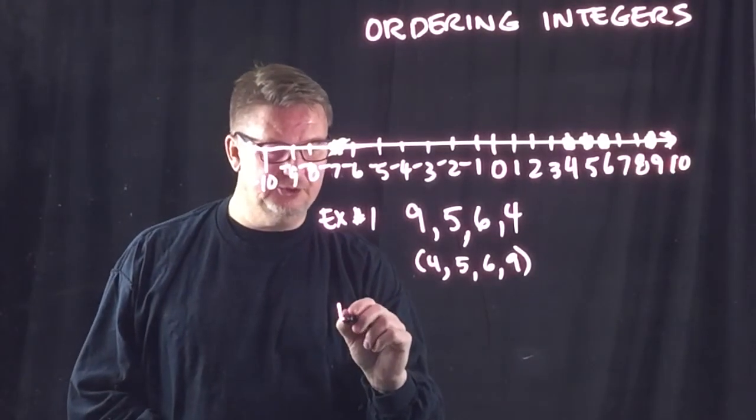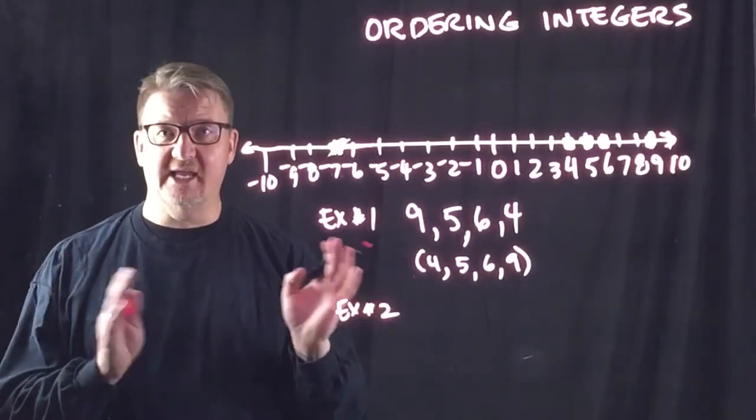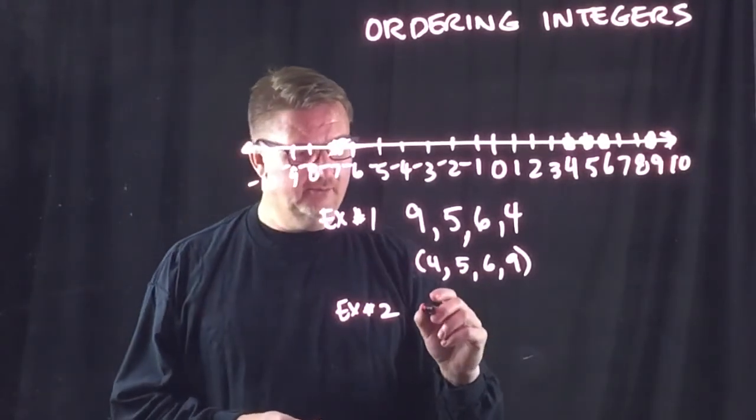So, the next set of numbers, example two, are going to be both positive and negative. So, my numbers are...